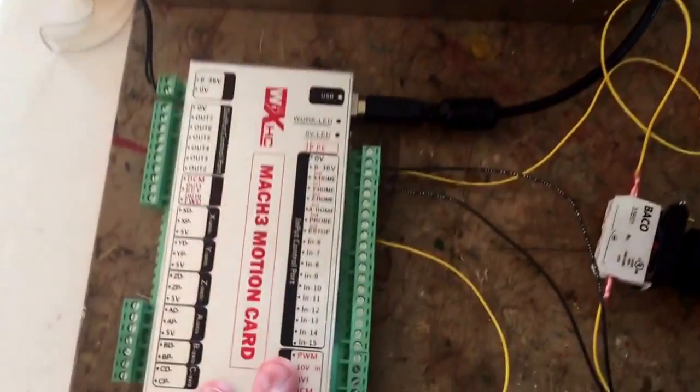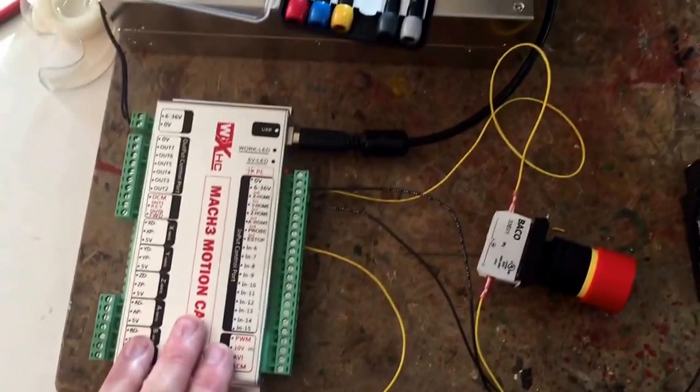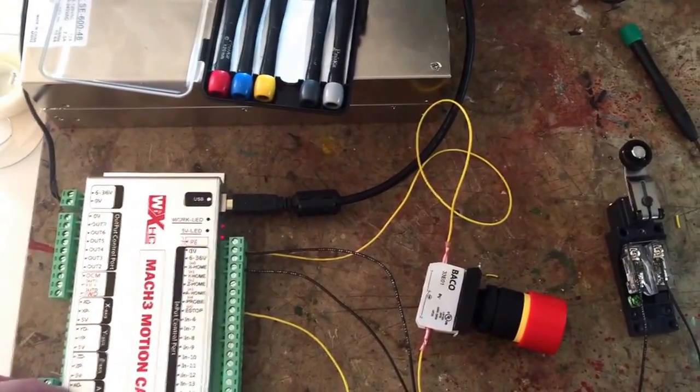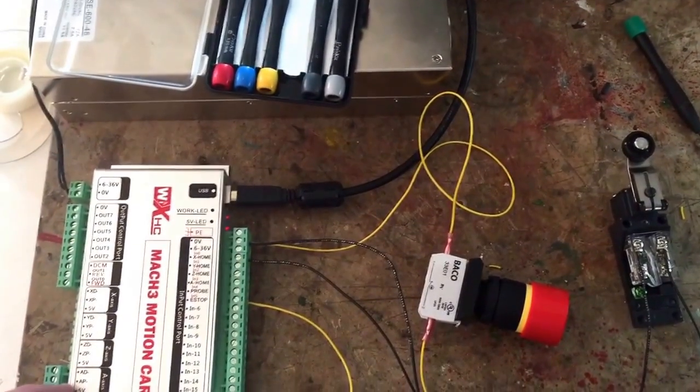So now I'm moving on with the Mach 3 motion card. This is a 3-axis card. Actually it's a 3-axis and then it also has an extra 4th axis here.